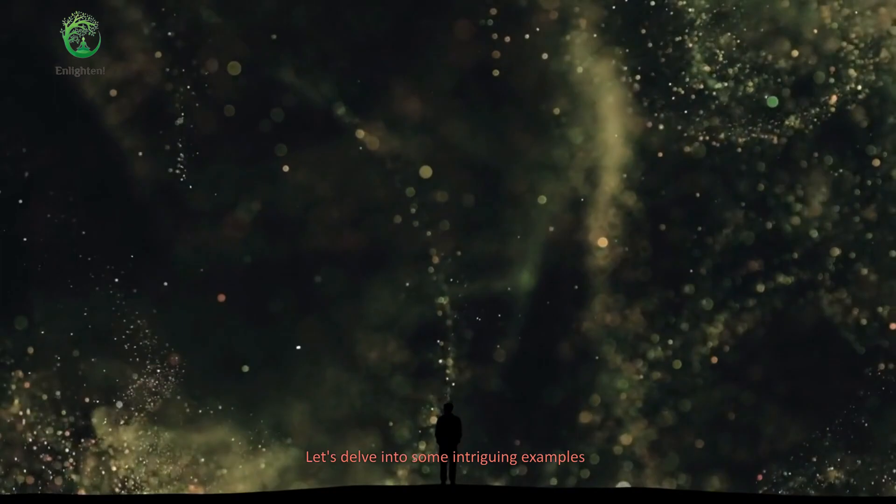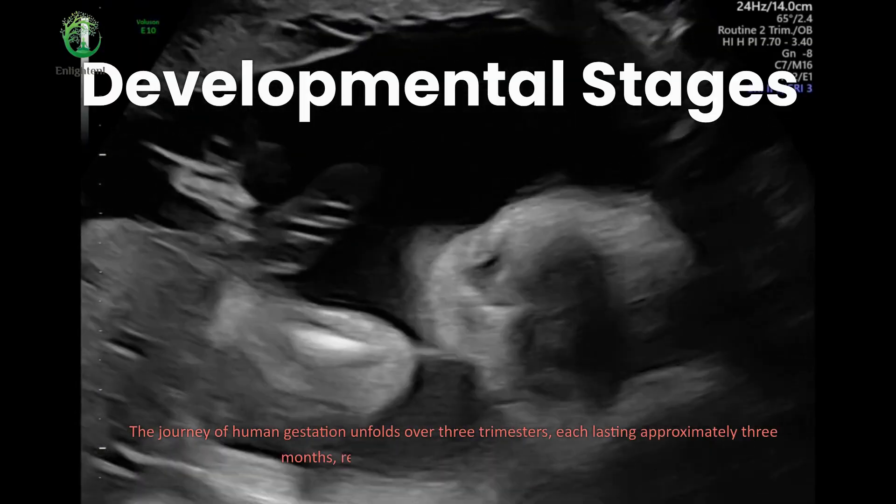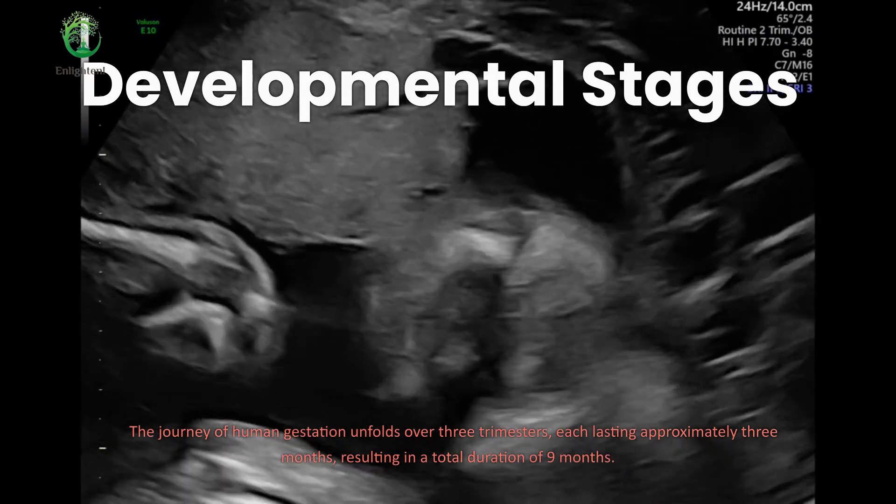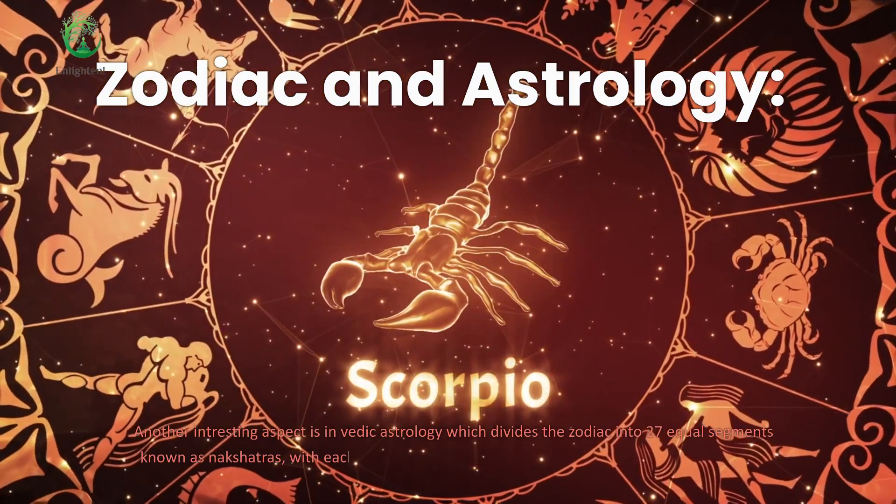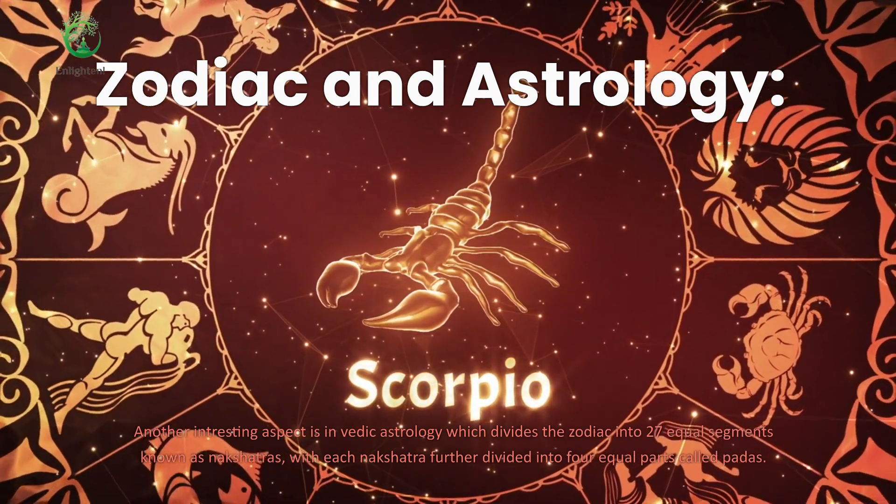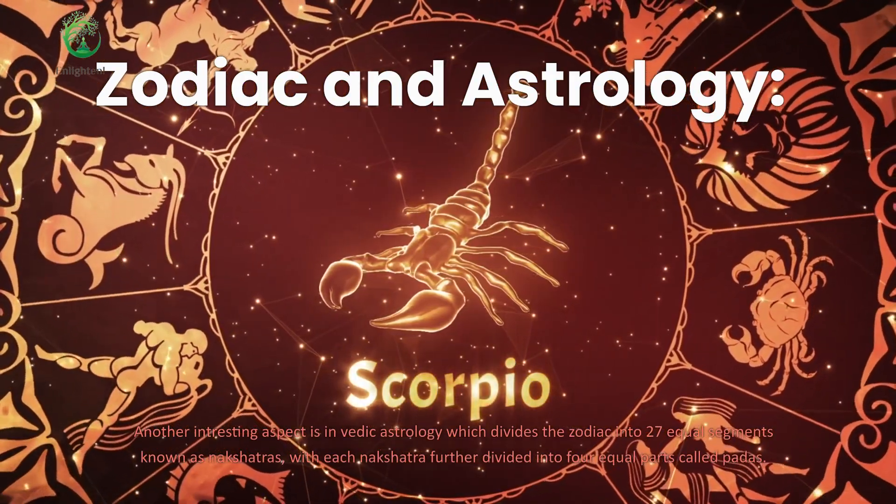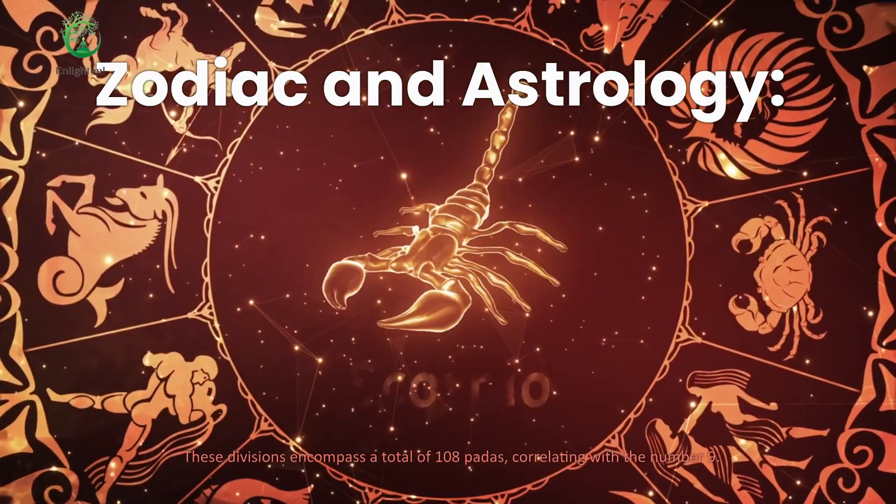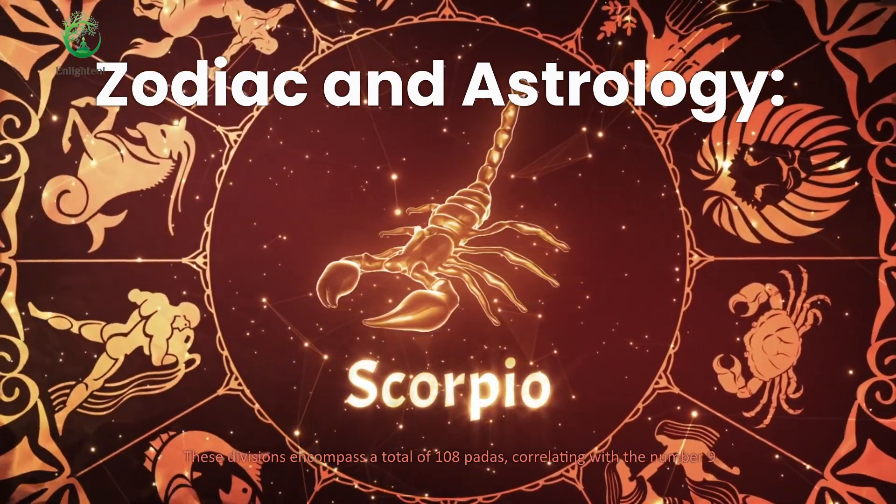Let's delve into some intriguing examples. The journey of human gestation unfolds over three trimesters, each lasting approximately three months, resulting in a total duration of nine months. Another interesting aspect is in Vedic astrology which divides the zodiac into 27 equal segments known as nakshatras, with each nakshatra further divided into four equal parts called padas. These divisions encompass a total of 108 padas, correlating with the number 9.